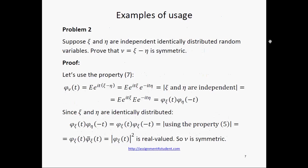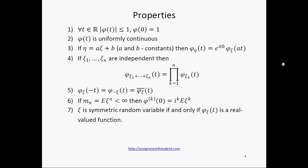Problem 2: Suppose xi and eta are independent identically distributed random variables. Let's prove that the difference nu = xi minus eta is a symmetric random variable. Proof: Let's use property 7. Here it is.